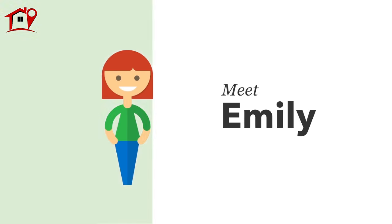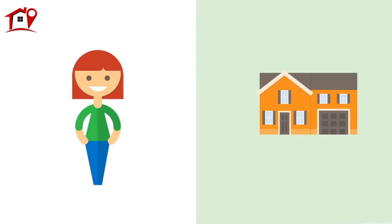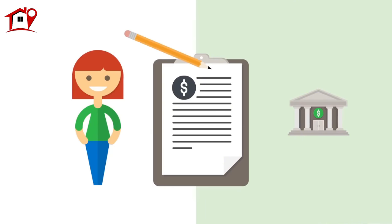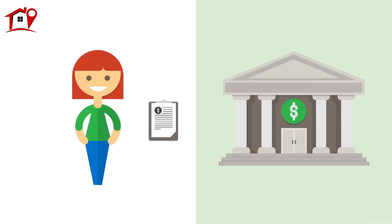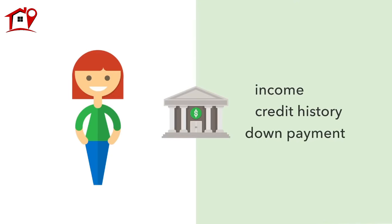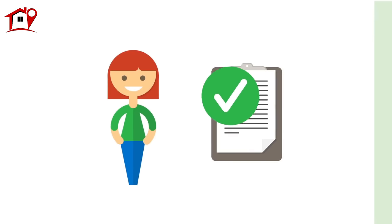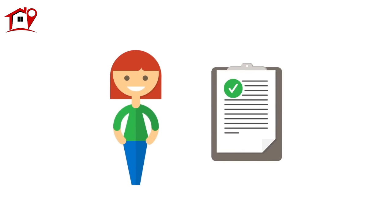Meet Emily. She wants to buy a home but doesn't have the money to pay for it in cash, so she applies for a loan at her bank. She tells the bank about her finances, the house she wants to buy, and other information. The bank reviews Emily's application, decides that she meets their criteria, and she gets approved. Once all the papers are signed, Emily closes the loan — or in mortgage speak, the loan is originated.